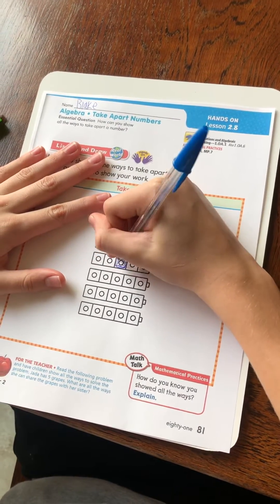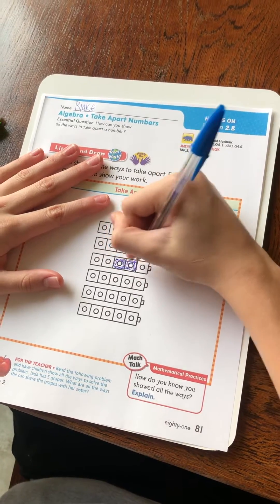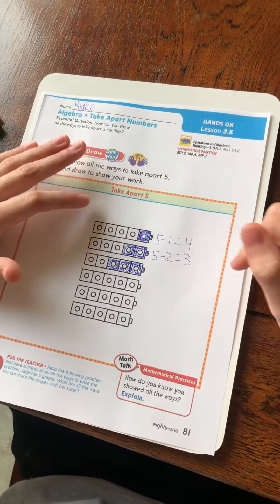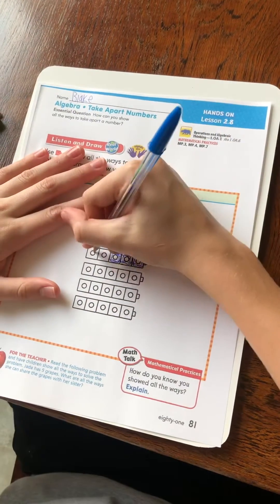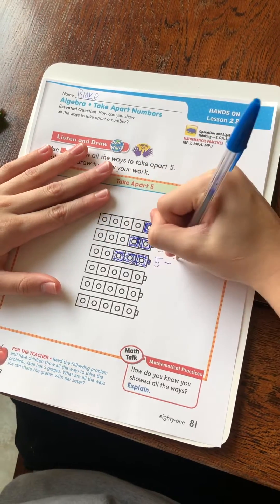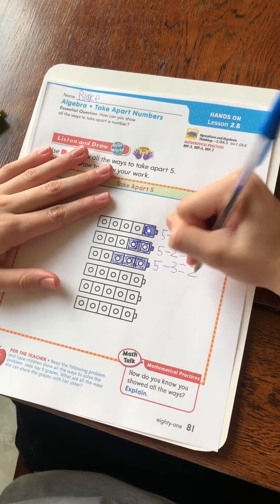Coloring three this time? Yes. Okay. So, the equation would be one, two, three, four, five, minus three equals two. Okay.